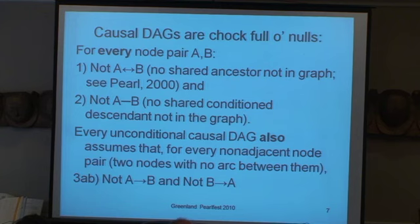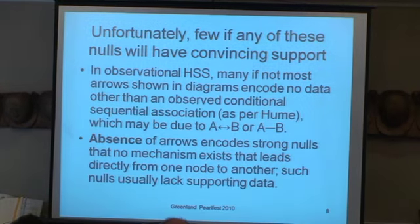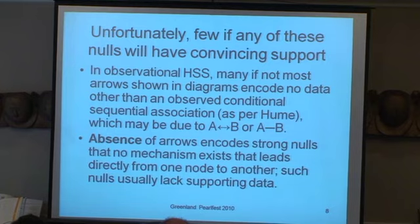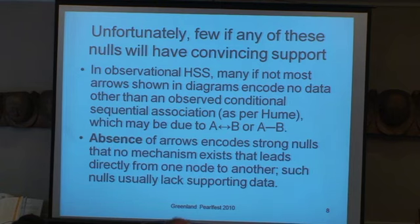Causal DAGs are chock full of nulls: for every node pair, there's no shared ancestor not in the graph, and also no shared conditioned descendant not in the graph. Few if any of these nulls will have convincing empirical support, especially anything like experimental support. Many of the arrows shown in diagrams encode no data other than an observed conditional sequential association, which may be due to them having a common cause or affecting a common selection. Absence of arrows encodes strong nulls that no mechanism exists that leads directly from one node to another, and again we usually lack supporting data.